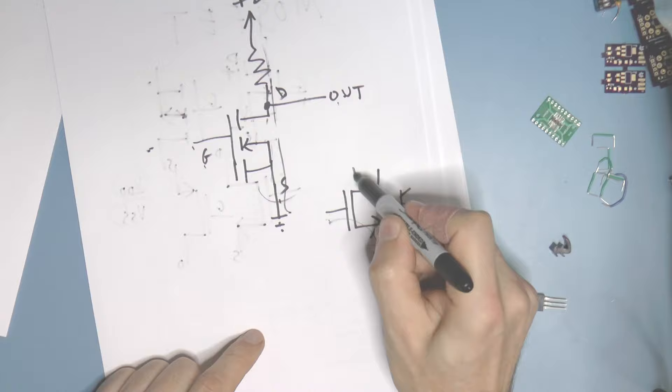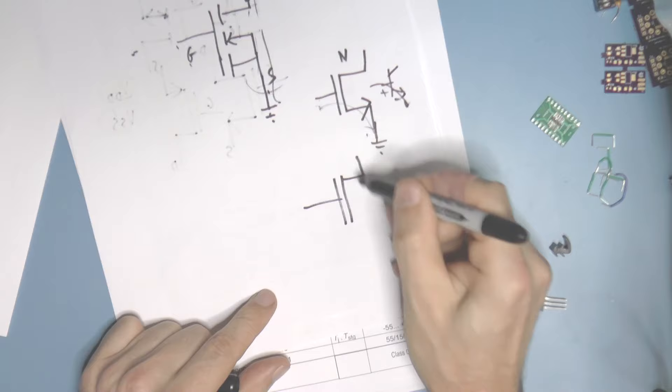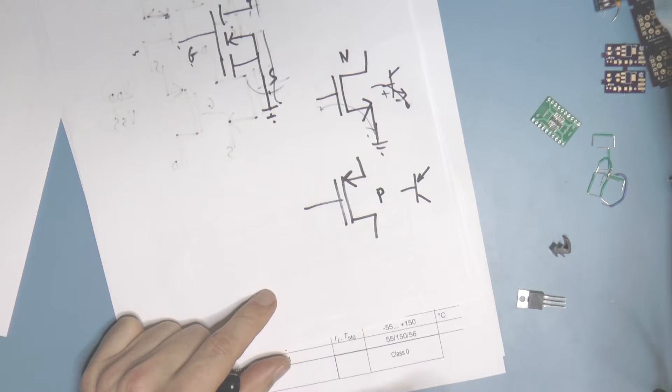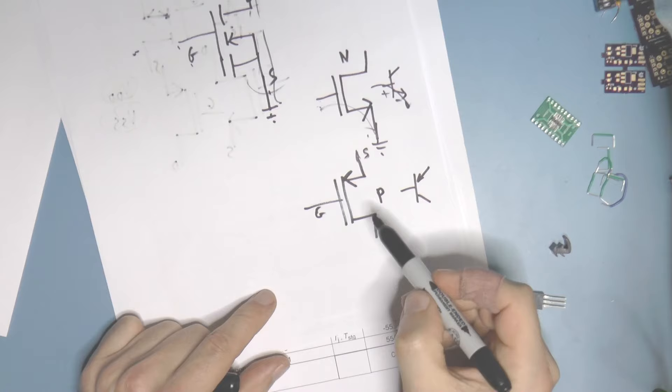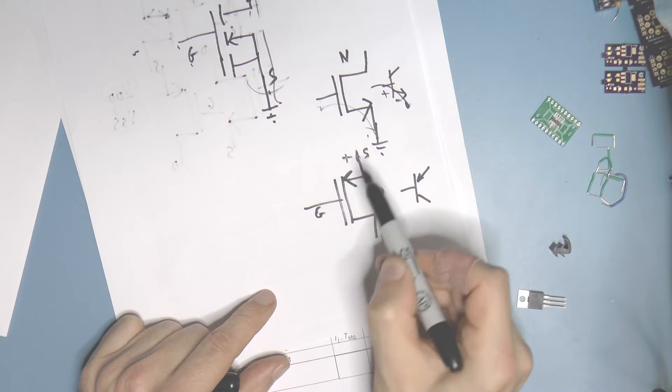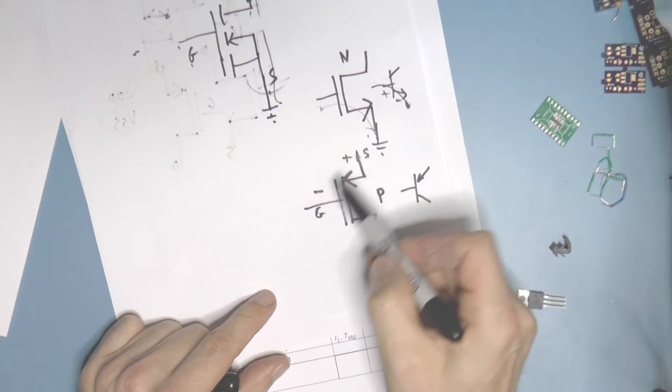This is an N-channel MOSFET, and a P-channel MOSFET would be the opposite symbol — just like a PNP transistor, kind of looks like that. With this, the opposite is true. Here is the gate, here is the source, and here is the drain. In order for this thing to be turned on, the voltage has to look so that the arrow is in line with the polarity of the voltage.